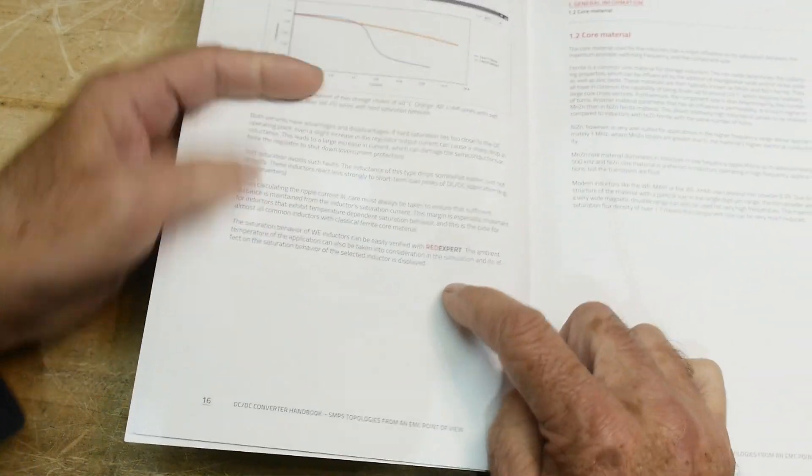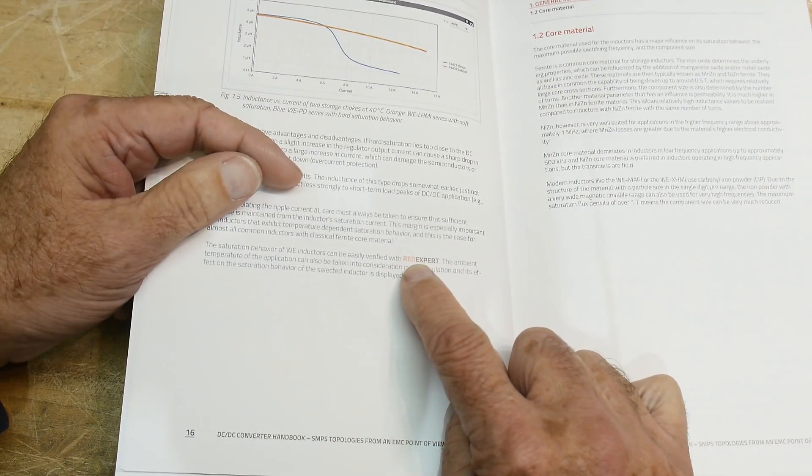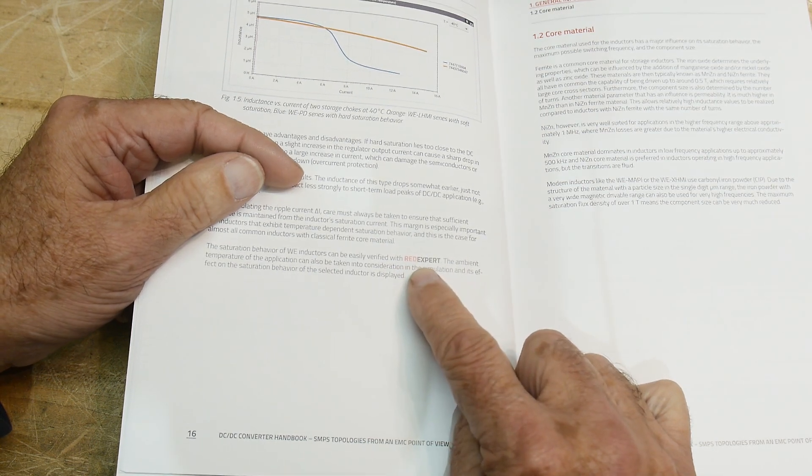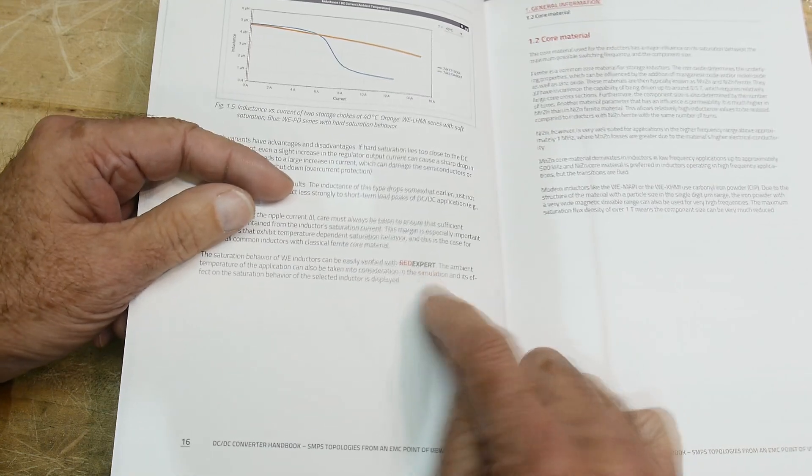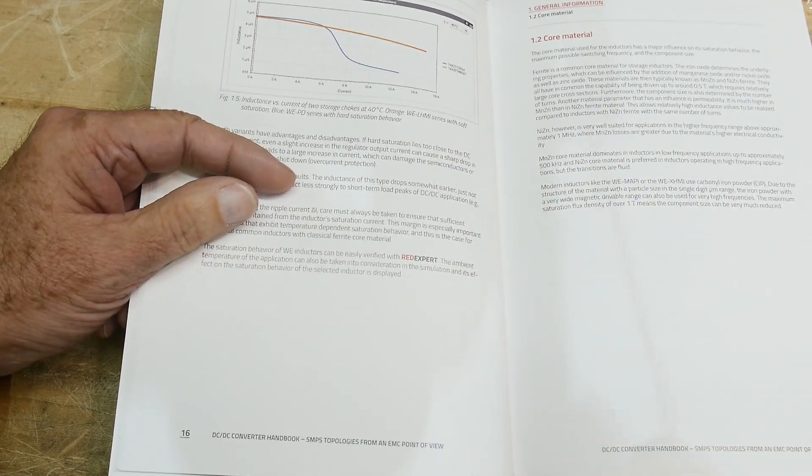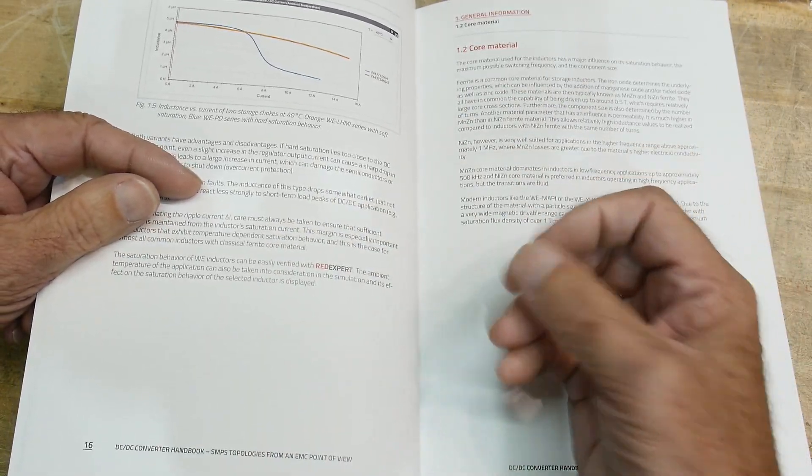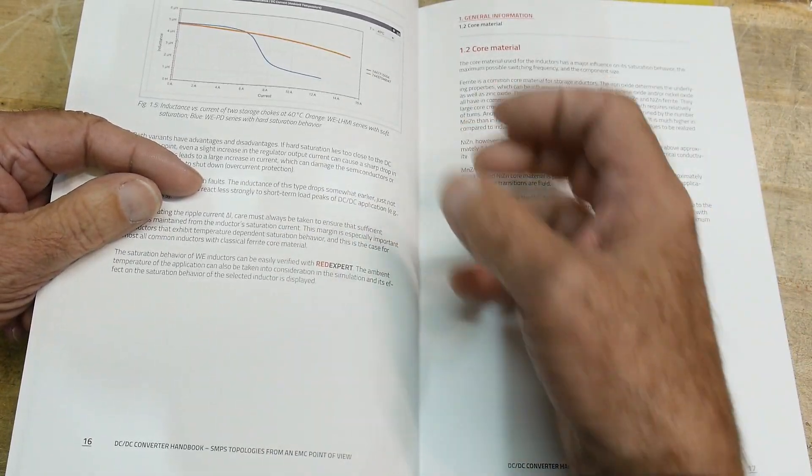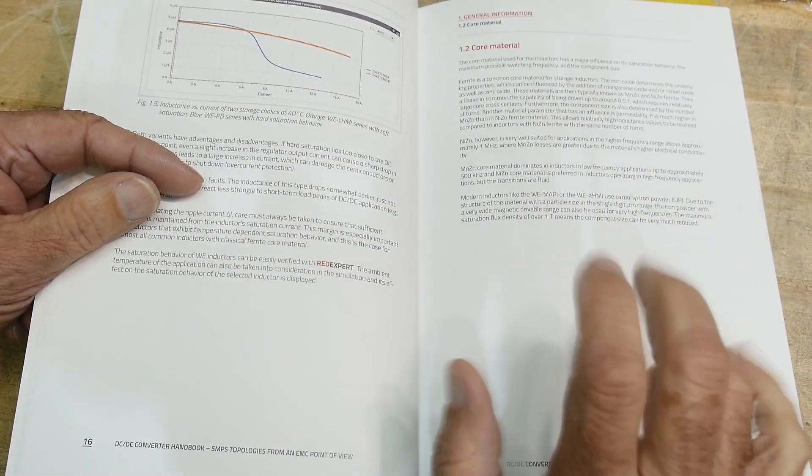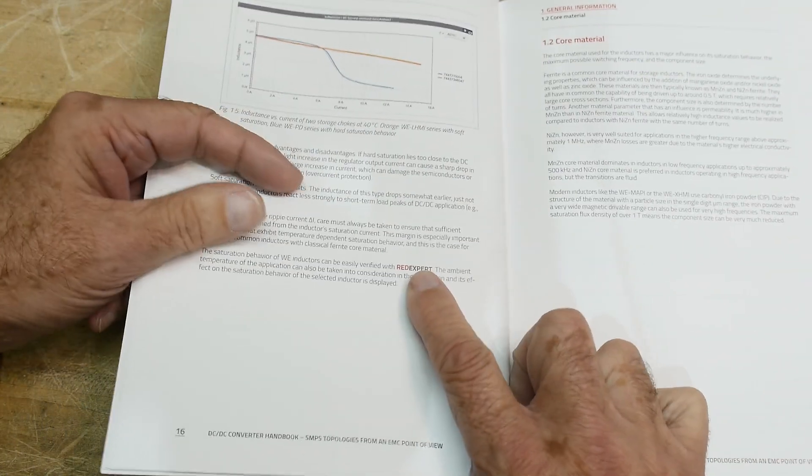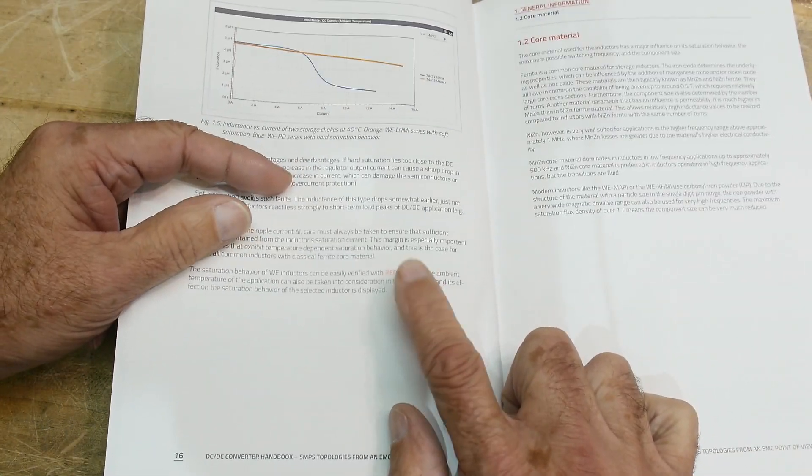But the book is just littered with references to this thing called Red Expert. Now Red Expert is a bunch of online calculators that they've developed. And I love online calculators. You can say, I need a seven pole Chebyshev, blah blah blah. You go online and you calculate the whole thing. There's a whole bunch of great online calculators.